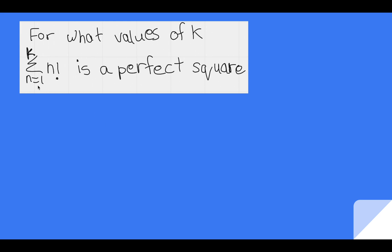For what values of k, sigma n equals 1 to k n factorial summation is a perfect square.